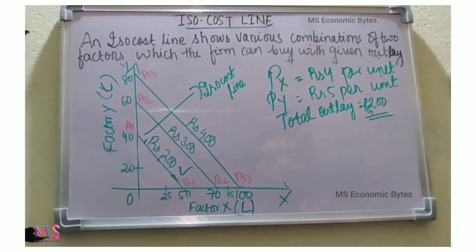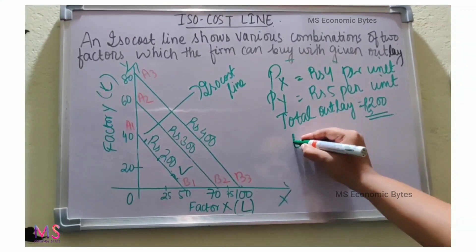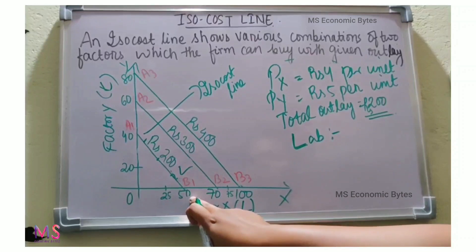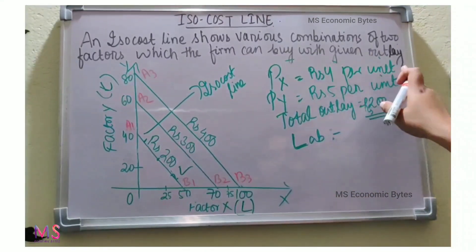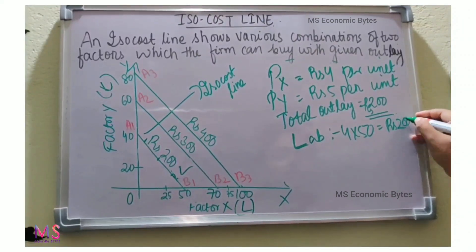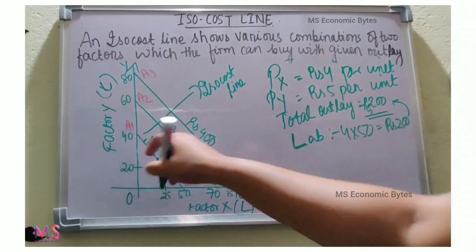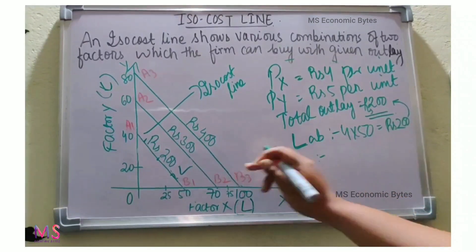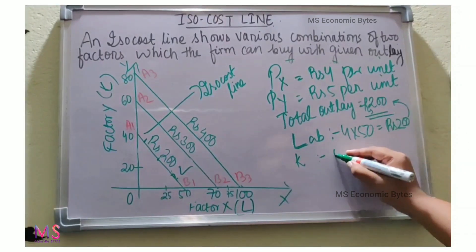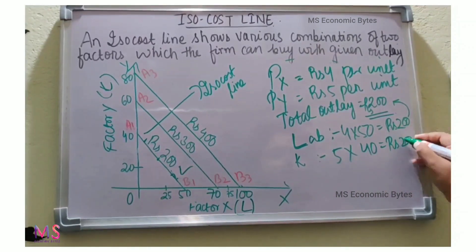Now, if the firm goes on buying only Factor X, which is labor, it can buy 50 units of labor because the price of X is ₹4 per unit, and 4 × 50 = ₹200, which is the total outlay. Similarly, if the firm goes on buying only Factor Y, which is capital, it can buy 40 units of Y because 5 × 40 = ₹200, the total outlay of the firm.